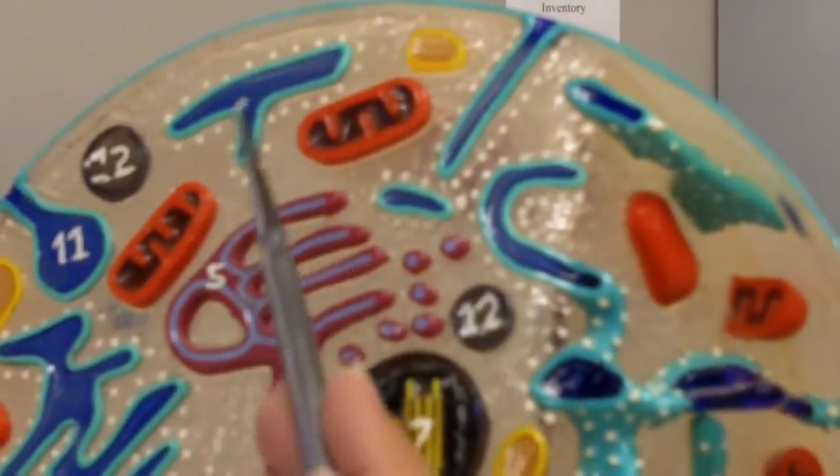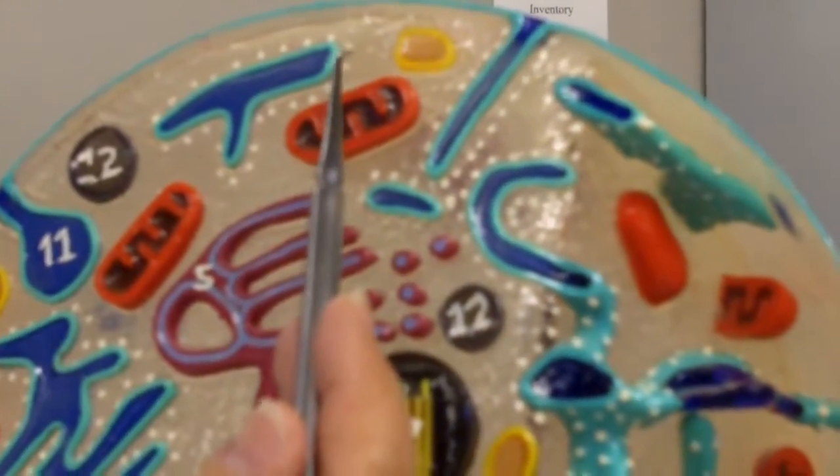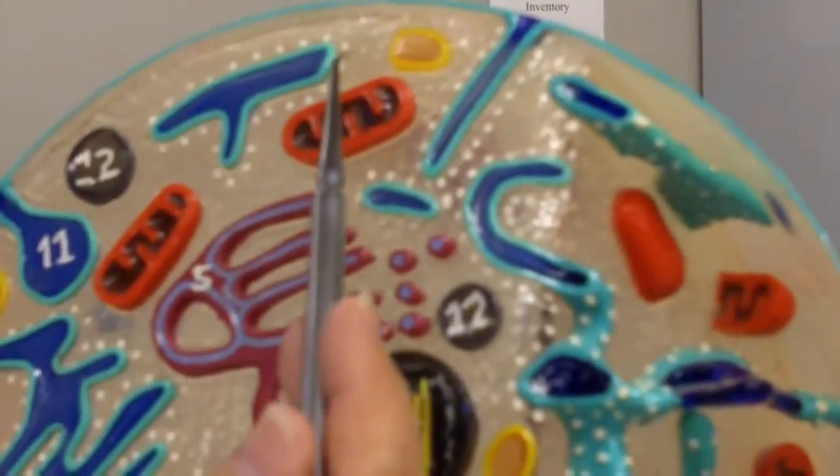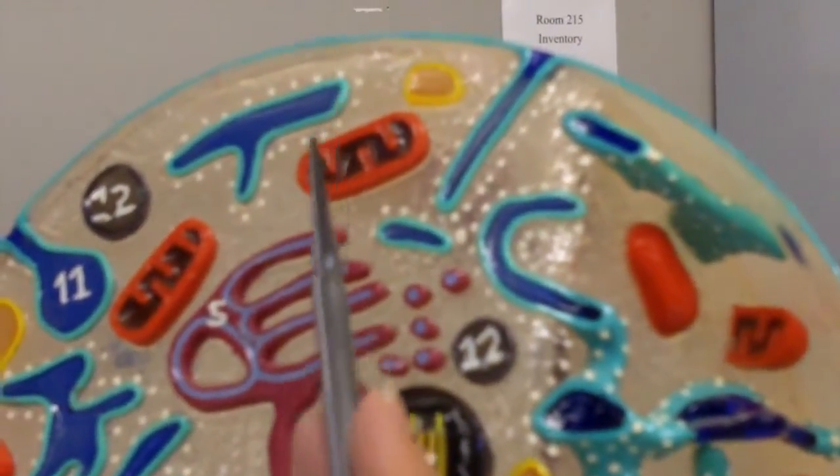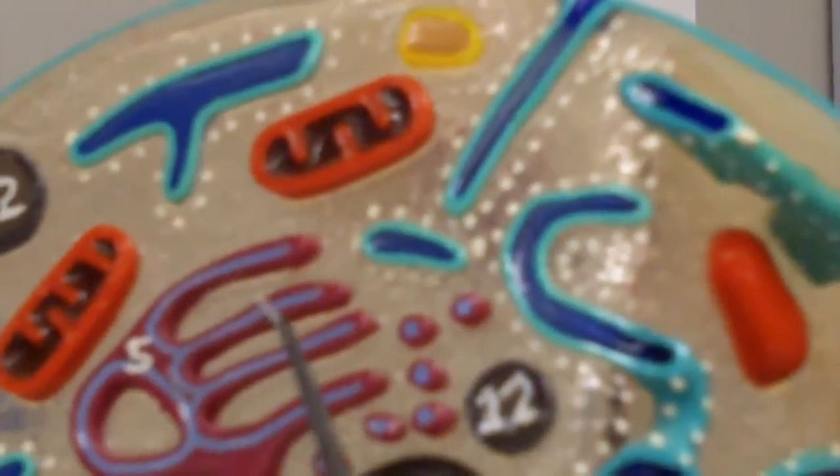A single glucose entering the cell would only make a net gain of two ATP. Two ATP put in, four out, net gain two. But using the mitochondria, we get 36 ATP.